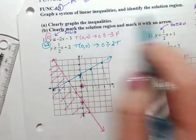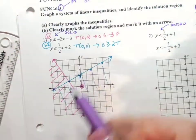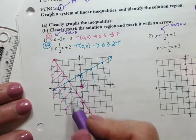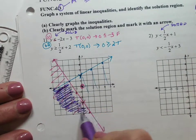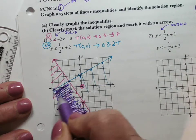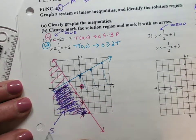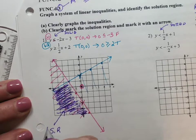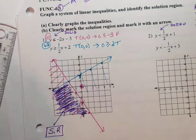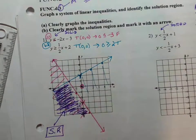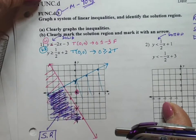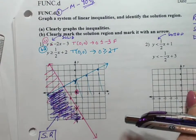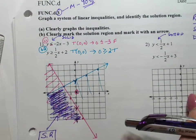So now, we've clearly graphed the inequalities. Clearly marked the solution region. The solution region, clearly shade in this area. And mark it solution region. So that is the meets criteria. I'll let you do number 2 on your own.